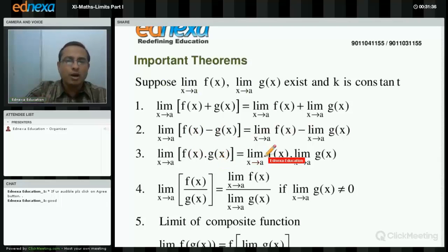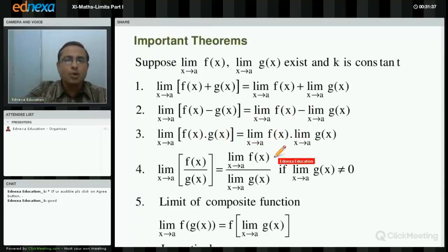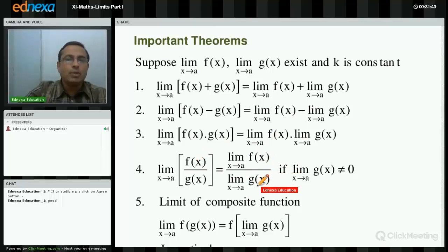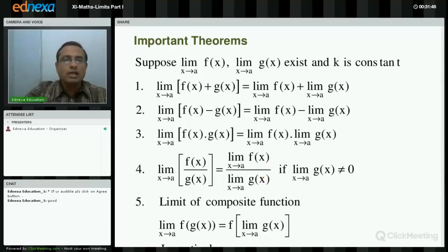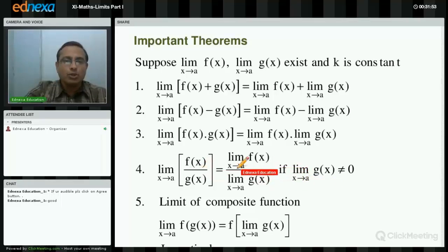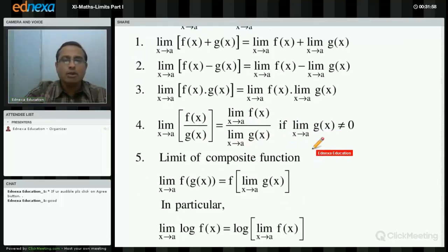Number 3: limit of product is product of limits. Number 4: limit of quotient is limit of numerator upon limit of denominator. Note that the denominator cannot be zero for the function to be a real-valued function. So limit of quotient is limit of numerator upon limit of denominator, provided limit of denominator is not equal to zero.